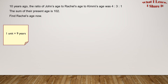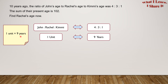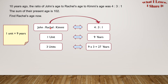Find Rachel's age now. So 10 years ago, John's age, Rachel's age, and Kimmy's age were in the ratio 4 to 3 to 1. But 1 unit corresponds to 9 years. In the ratio, Rachel's age is 3 units. This means 3 units will correspond to 9 times 3, which equals 27 years.